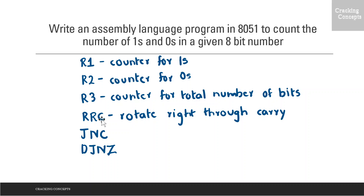We will also use the jump instructions JNC, which jumps to the specified relative address if the carry flag is not set, and DJNZ, which decrements the specified operand and jumps to the specified relative address only if the content of the specified operand is not 0.